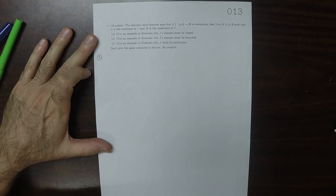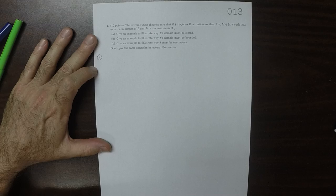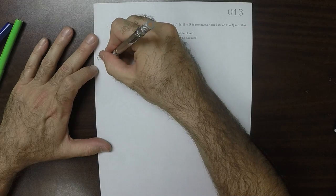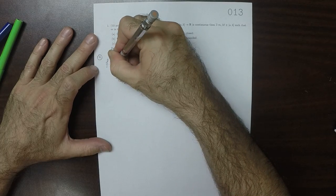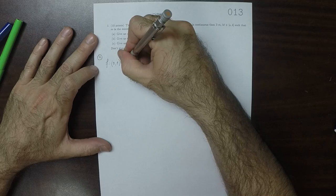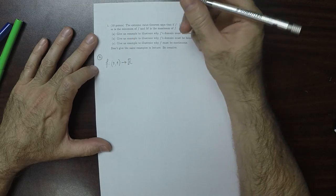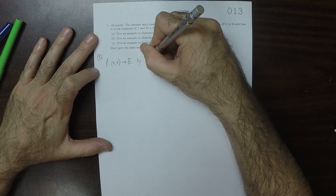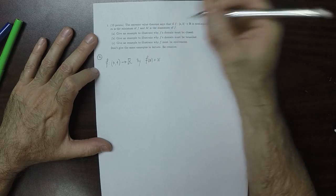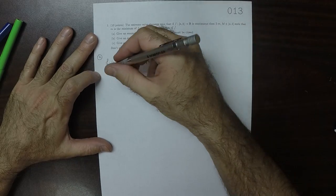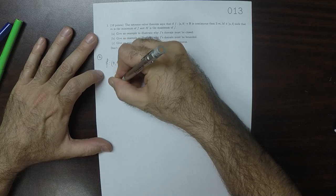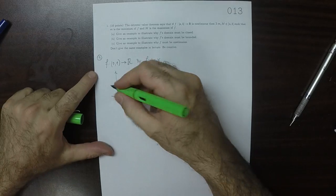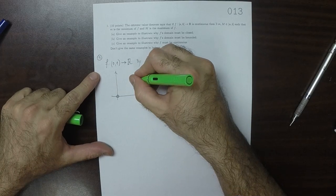So for part A, let's consider F from 0 to 1 to the reals. And let's give it by F of x is x. Then the function looks like this.